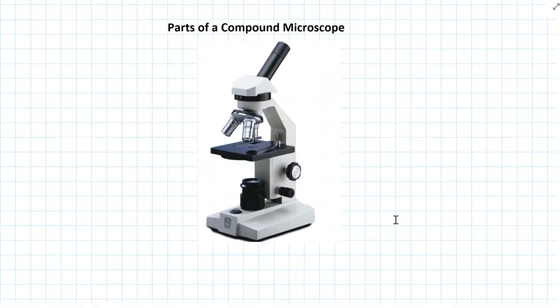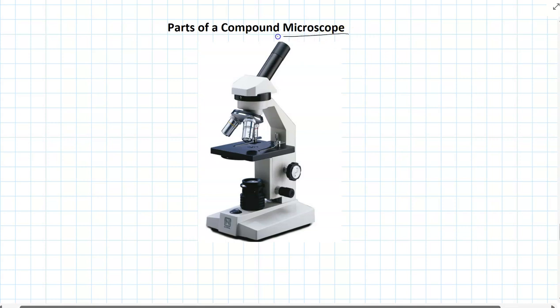The last main section to learn about is all about microscopes. You need to know the parts of the microscope we use at school, which are compound microscopes, and you need to know the different types of microscopes that are out there.